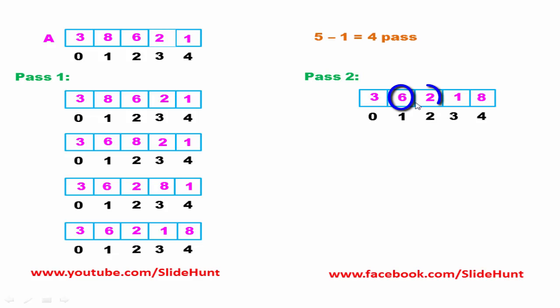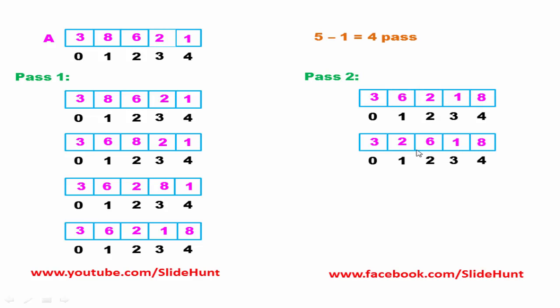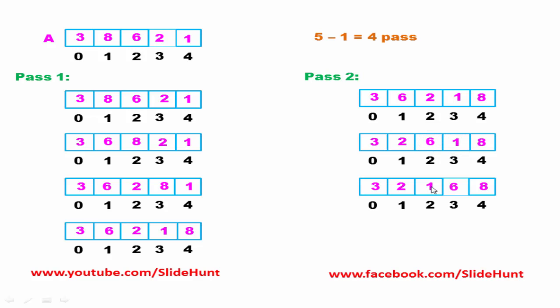Next, we compare 6 with 2. 6 is greater than 2, so we swap these two elements. After swapping, 2 comes to index 1 and 6 goes to index 2. Next, we compare 6 with 1. 6 is greater than 1, so we swap these two elements. After swapping, 1 comes to index 2 and 6 goes to index 3. At the end of pass 2, 6 is at the correct position.